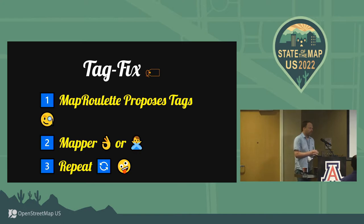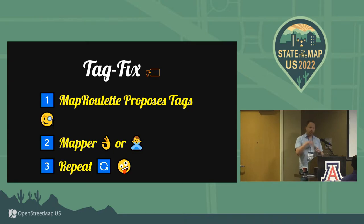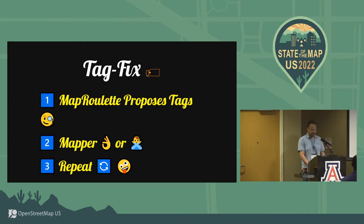There are two other types that I want to talk about today. One is the tag fix. That's where MapRoulette proposes changes to the existing tags on a feature in OSM, and the mapper just accepts or rejects those changes and then repeats. There's no round trip to iD or JOSM — everything happens right inside MapRoulette. So it's potentially quicker, but it only works on tags.